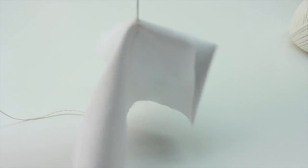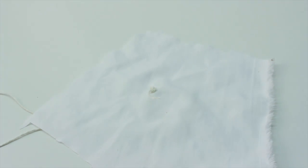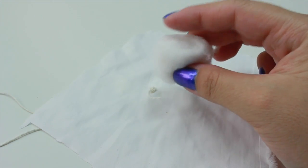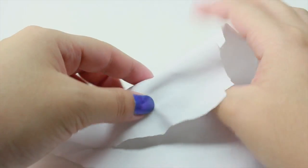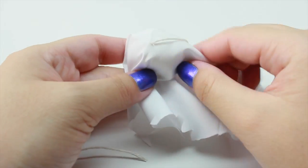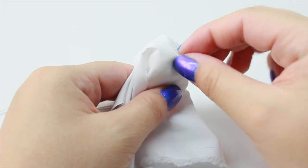This is what you should have, so it kind of dangles. The next thing we're going to do is take the cotton ball and place it right near the knot, and then we're going to cover it. Go ahead and cover it and just wrap it around. It doesn't have to be too neat.